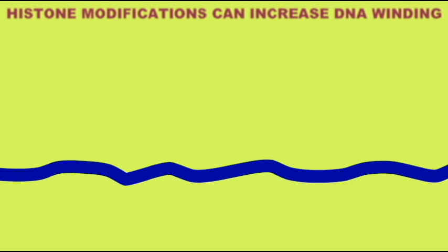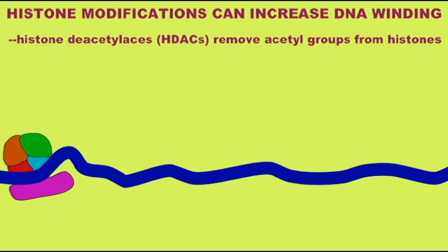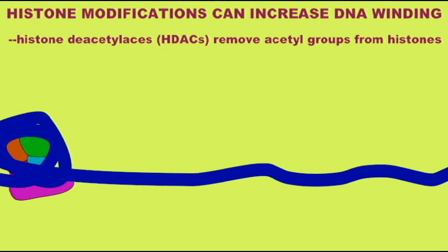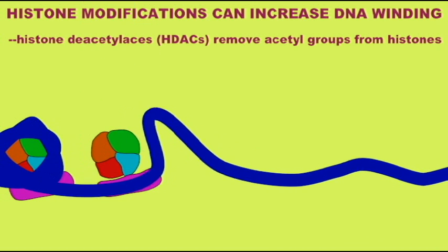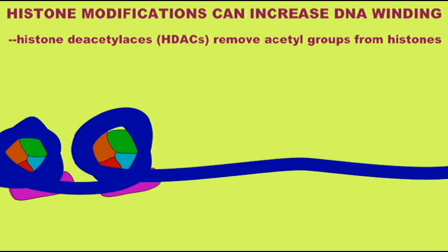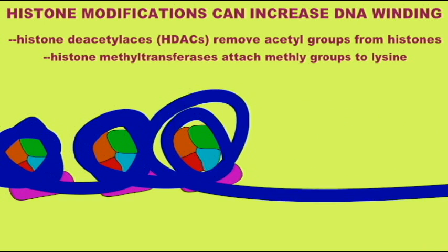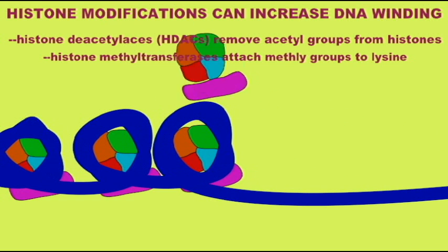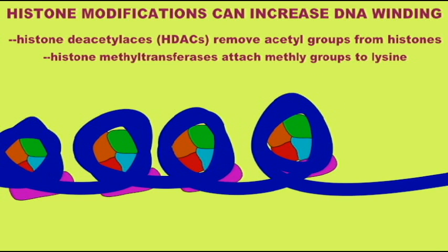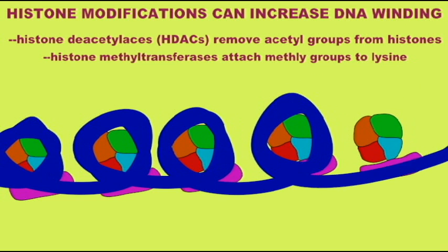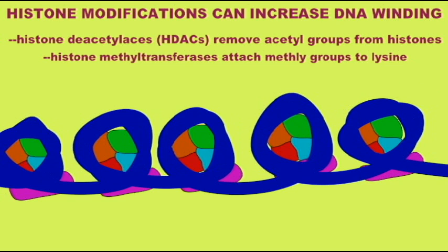Also, there are enzymes which will remove the acetyl groups from the histone proteins. This will increase the attraction between the negative DNA and positive histones and thus cause the DNA to coil more tightly. These enzymes are known as histone deacetylases, or HDACs, and they cause DNA to coil more tightly and inactivate genes.